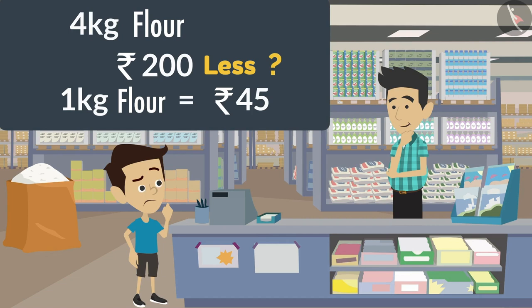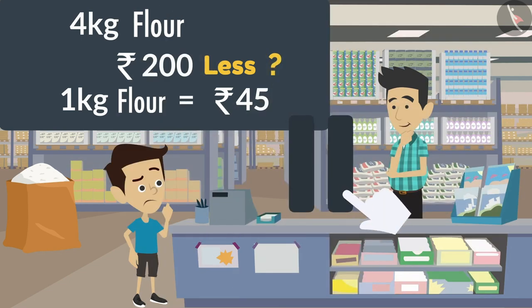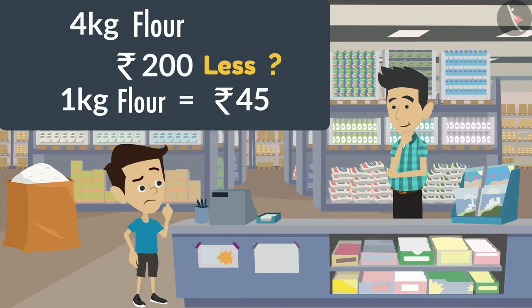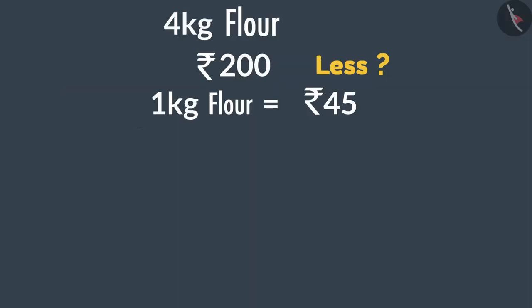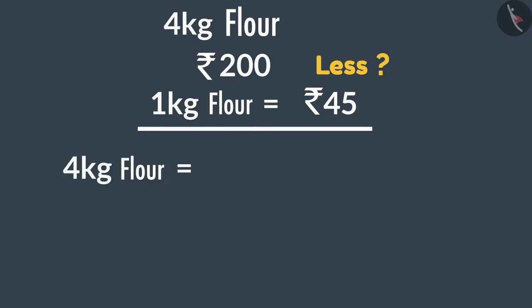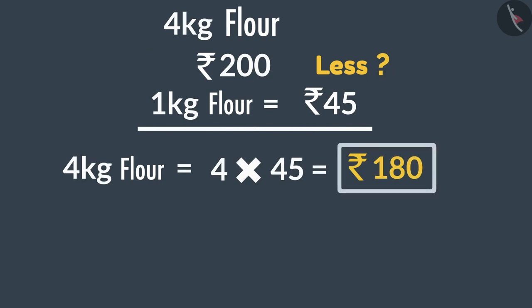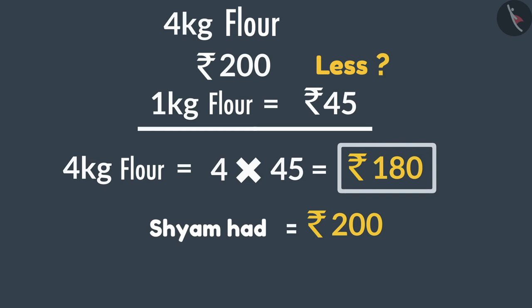Think for a while — you can pause the video if you want. If the cost of 1 kg of flour is 45 rupees, then the cost of 4 kgs of flour would be 4 times 45, that is 180 rupees. That means Sham can easily buy 4 kgs of flour from the money given, and he will be left with 20 rupees.